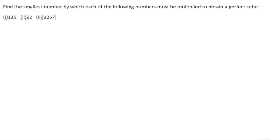Find the smallest number by which each of the following numbers must be multiplied to obtain a perfect cube. There is a shortage of a number we need to find out, so that we need to multiply to get a perfect cube. Let us start the first bit — we are having 135, and for that we will find out the prime factors of 135.